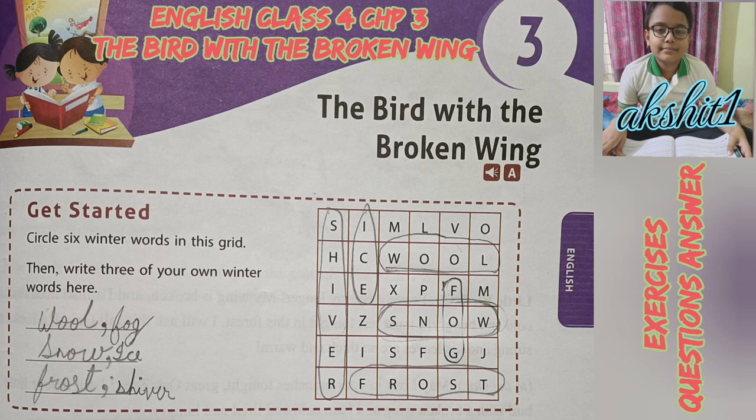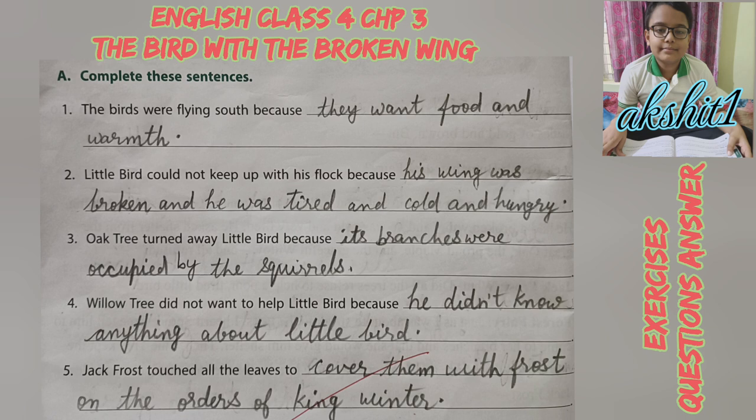Circle six winter words in this grid, then write three of your own winter words. The six winter words in the grid are: wool, fog, snow, ice, frost, shiver. Sweater, shawl, and blazer are three more winter words of your own.